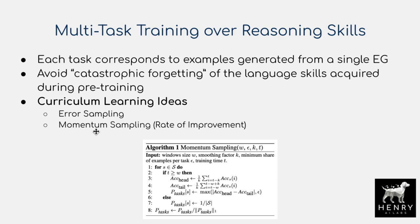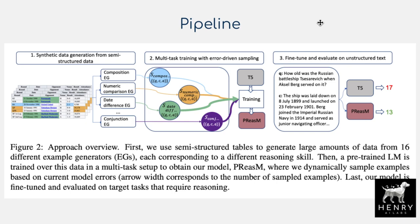The overall pipeline uses example generator templates to produce question-answering data for each reasoning skill — composition, numeric comparison, date difference, and conjunction — then samples from this data using multitask curriculum learning with error-driven sampling to fine-tune a T5 pre-trained checkpoint, producing the PRISM model. This is then evaluated on reading comprehension datasets, which function as extractive question answering: given a question-context pair, the model classifies the answer span within the context.